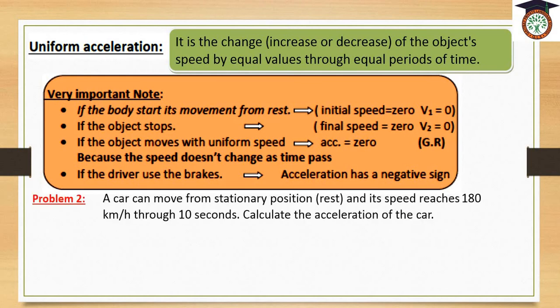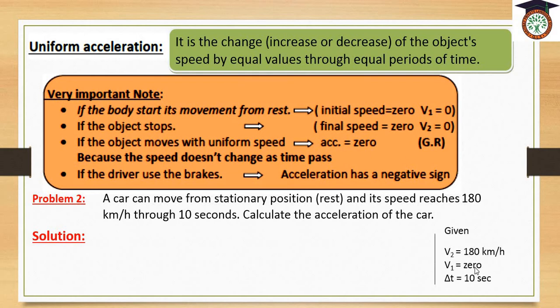Problem 2: a car can move from a stationary position (rest) and its speed reaches 180 km per hour through 10 seconds. Calculate the acceleration of the car. Given: V1 (initial speed) = 0, final speed = 180 km per hour, and the time taken = 10 seconds.